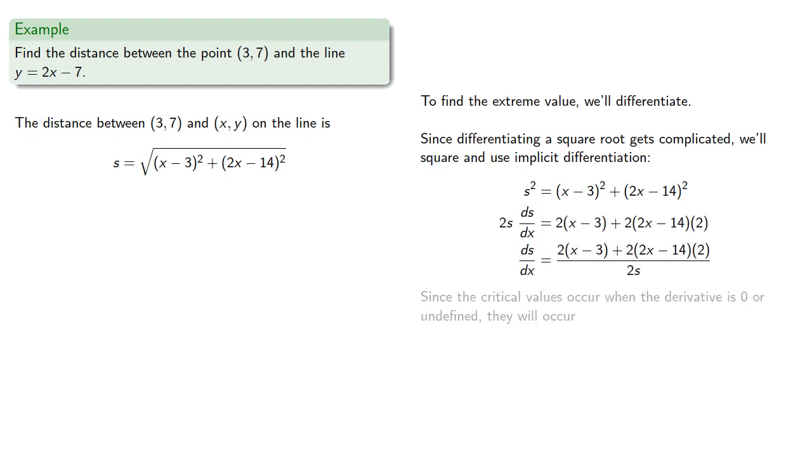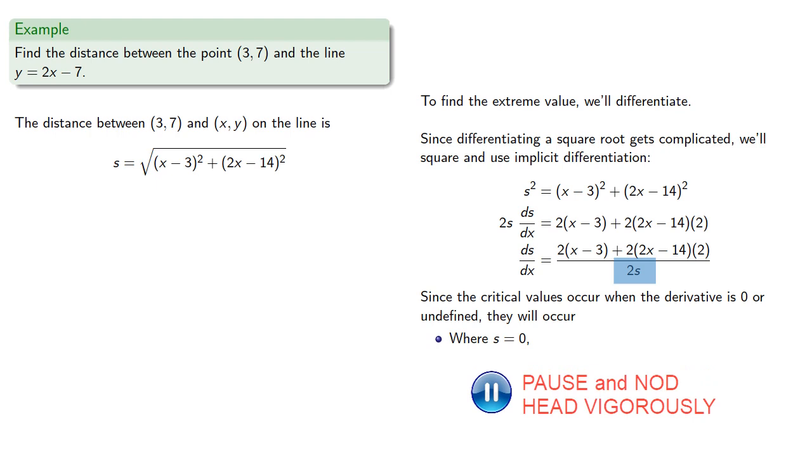And since the critical values occur when the derivative is 0 or undefined, they'll occur where the denominator is 0, which would make the derivative undefined, or where the numerator is 0, which would make the derivative 0.